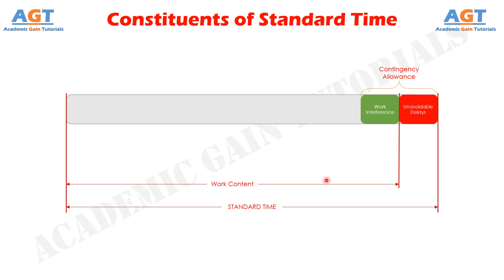After the contingency allowances are taken into account, there will also be some relaxation allowances. The relaxation allowances are calculated so as to allow the worker to recover from fatigue. This relaxation allowance is an addition to the basic time intended to provide the worker with the opportunity to recover from the physiological and psychological effects of carrying out specified work under specified conditions and to allow attention to personal needs. The amount of allowance will depend on the nature of the job.